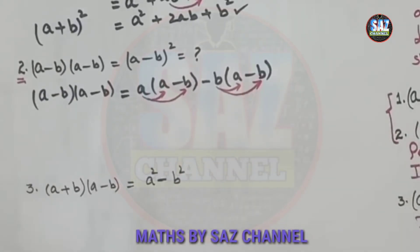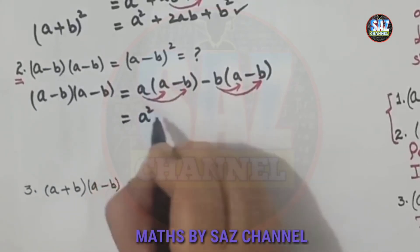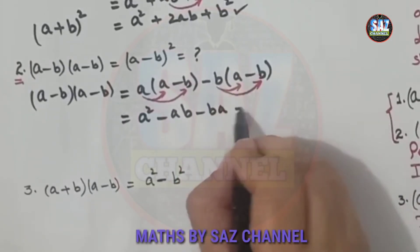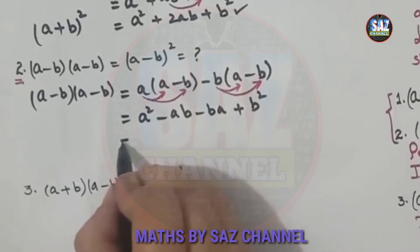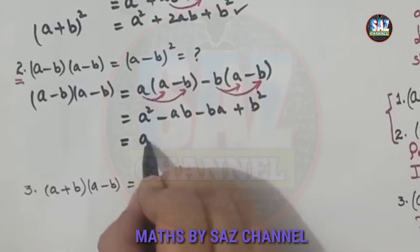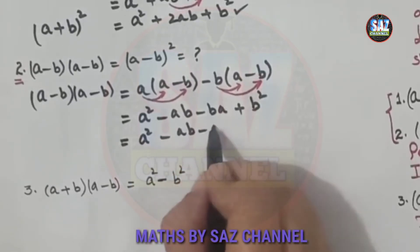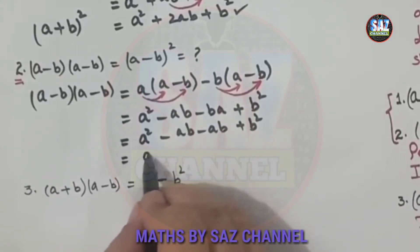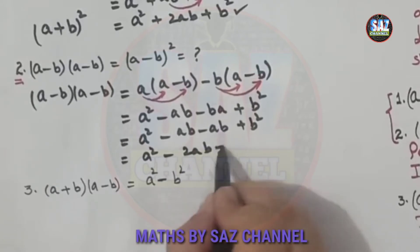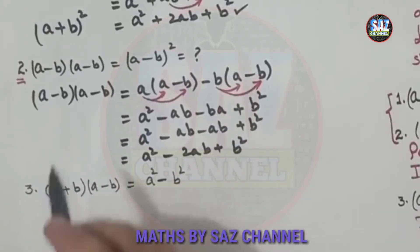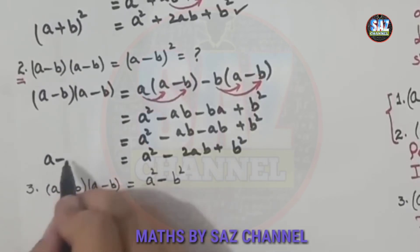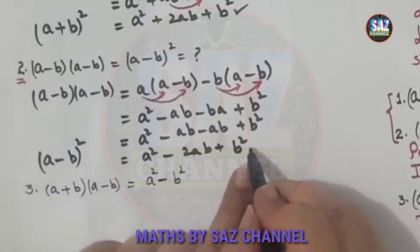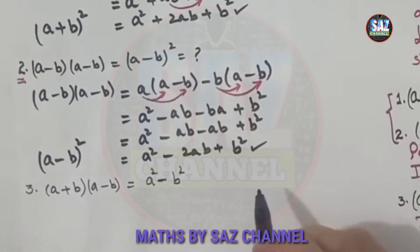This gives a × a = a², then -ab, then -ba, and (-b)×(-b) = +b². Since ab and ba are like terms, we rearrange to get a² - ab - ab + b², which simplifies to a² - 2ab + b². So whenever we need to expand (a - b)², we put the values into the formula and expand it using this identity.